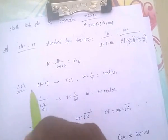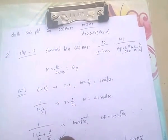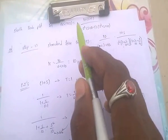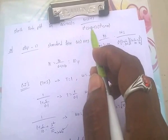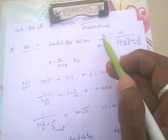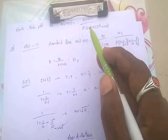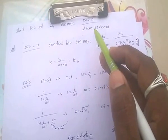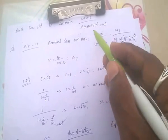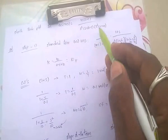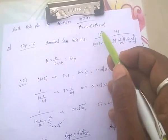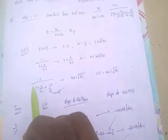For this, first convert G(s)H(s) into standard form: 10(1+s) divided by s² into 0.1(1+s/0.1) into 10(1+s/10+s²/10). The K value equals 10 divided by 0.1 into 10, that is K equals 10. Corner frequencies: for (1+s), T equals 1, so omega equals 1/T equals 1 radian per second. For (1+s/0.1), T equals 1/0.1, so omega equals 0.1 radian per second.